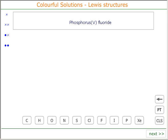The Lewis structure and shape of Phosphorus 5 Fluoride. Phosphorus 5 Fluoride has the formula PF5.